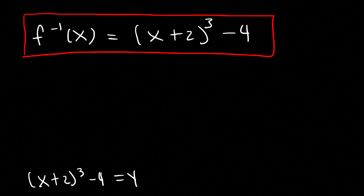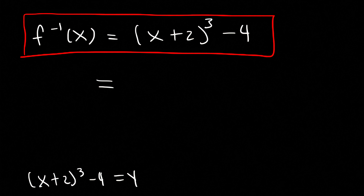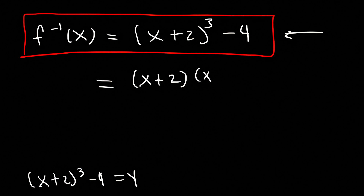Now, if you want to expand it, you could. It might take some time, but if you're taking a multiple choice test and you don't see this answer, you may need to consider multiplying x plus 2 three times. Then once you get a polynomial, just subtract it by 4 and combine like terms. That's another way to express the answer as well, but I'm not going to do that in this lesson.